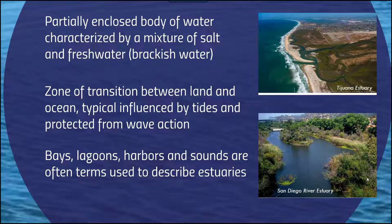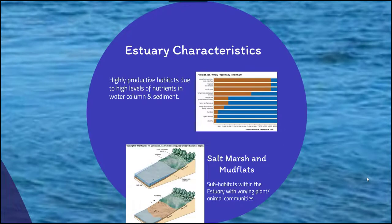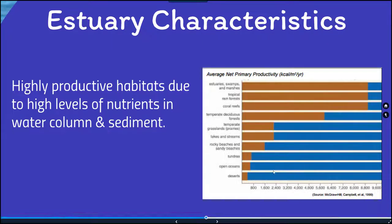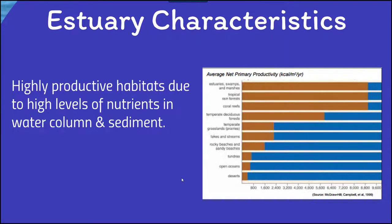You'll see variability in terms of the naming convention of a particular estuary or how it's referred to. Estuaries are highly productive habitats due to high levels of nutrients in the water column and sediment. As shown in the figure, estuary swamps and marshes have a comparable level of net primary productivity — calculated as kilocalories per meter squared per year — to tropical rainforests and coral reefs. That makes them incredibly important regions whose nutrient cycles contribute to surrounding habitats and ecosystems.